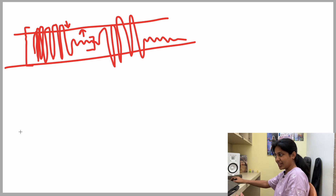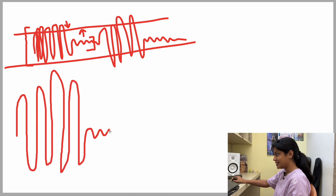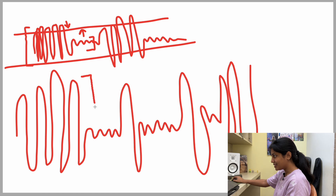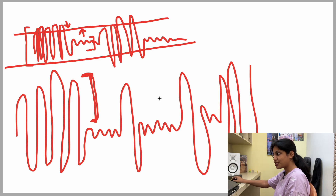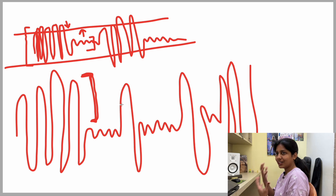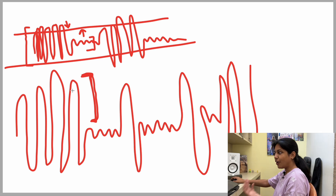Now that we know what a compressor does in a brief manner — imagine you have a track like this where you can see the difference between the loudest section and the softest section is too big. You can still add a compressor, set a threshold, and make it work, but the compressor has a lot of work to do. It has to compress harder to make the soft sections louder and the loud sections softer.